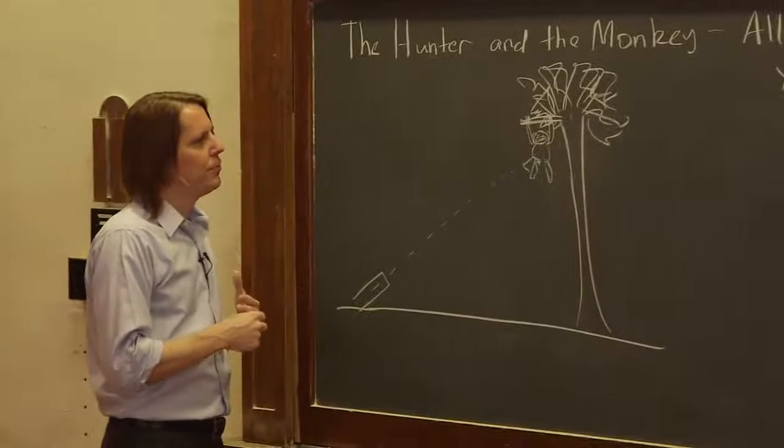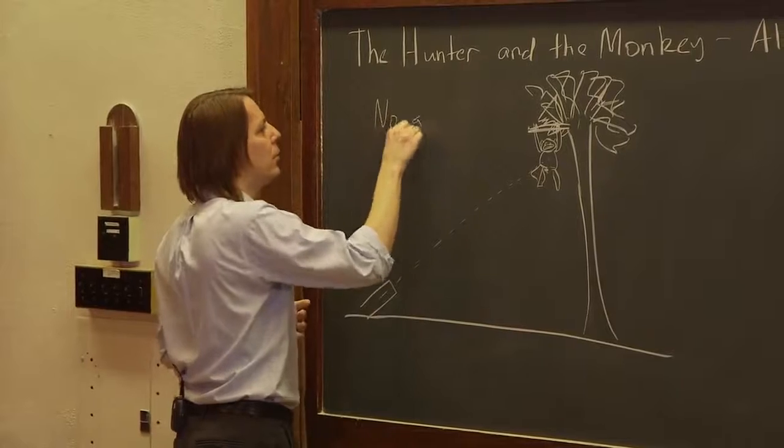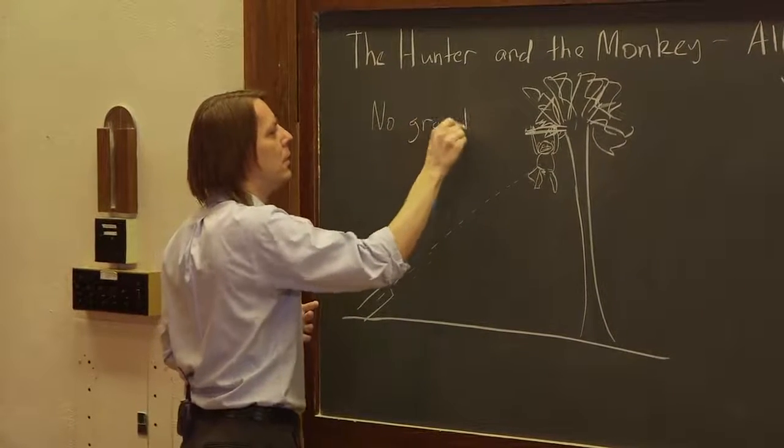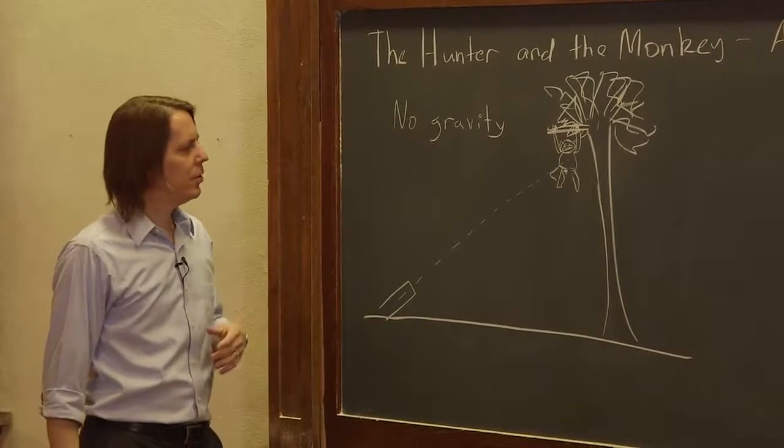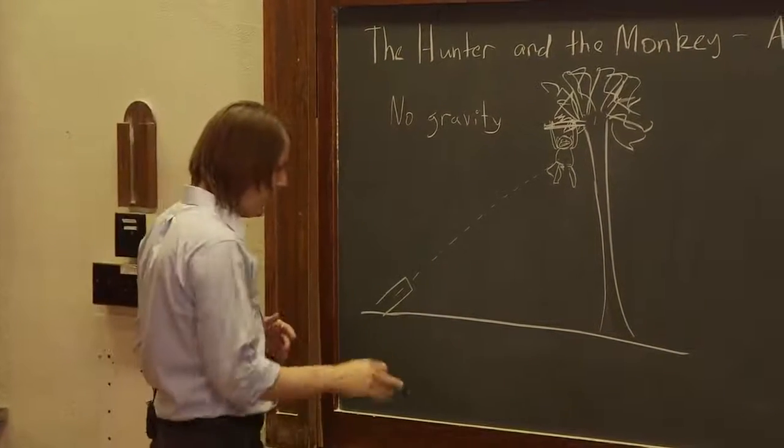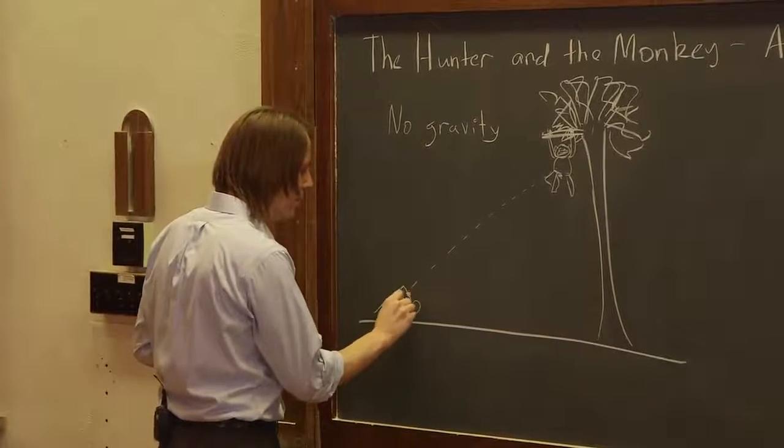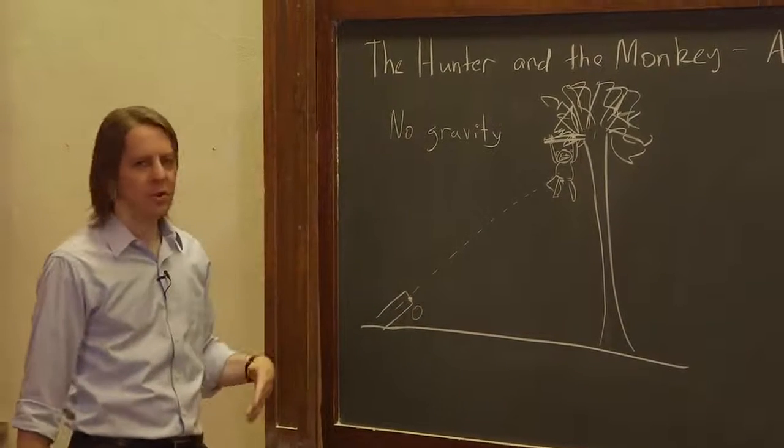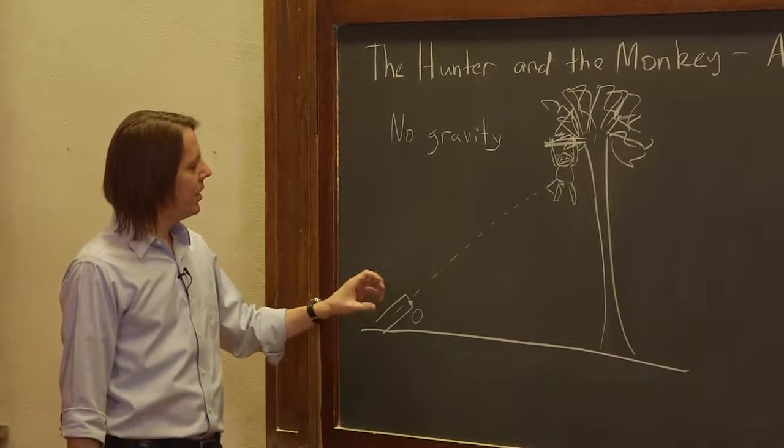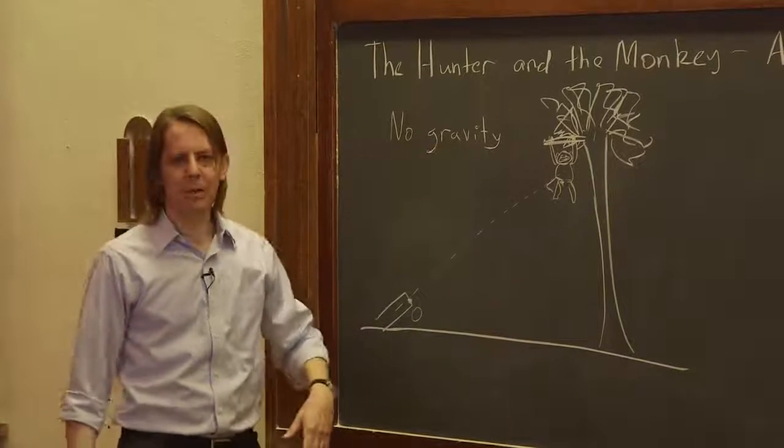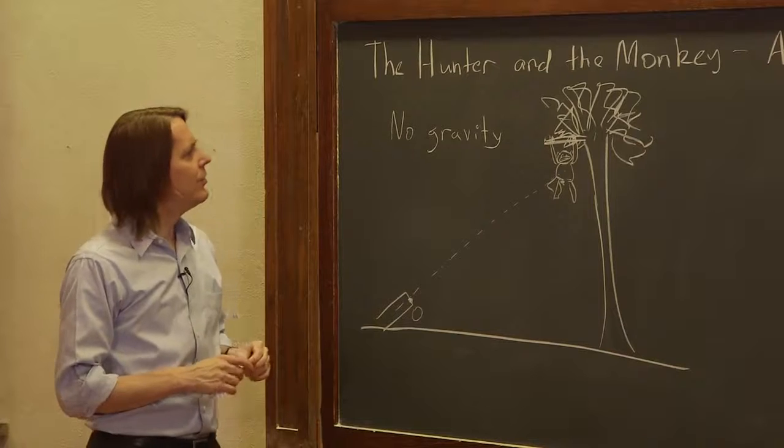The thought experiment we're going to do first is we're going to imagine what if we had no gravity. Let's write the kinematics as though there's no gravity. So the bullet leaves the gun, let's call that the origin. And the time the bullet leaves the gun, we'll call that time equals zero, that way the bullet leaves the gun from the origin and the monkey drops at the same time. The bang scares the monkey. It all happens instantaneously.